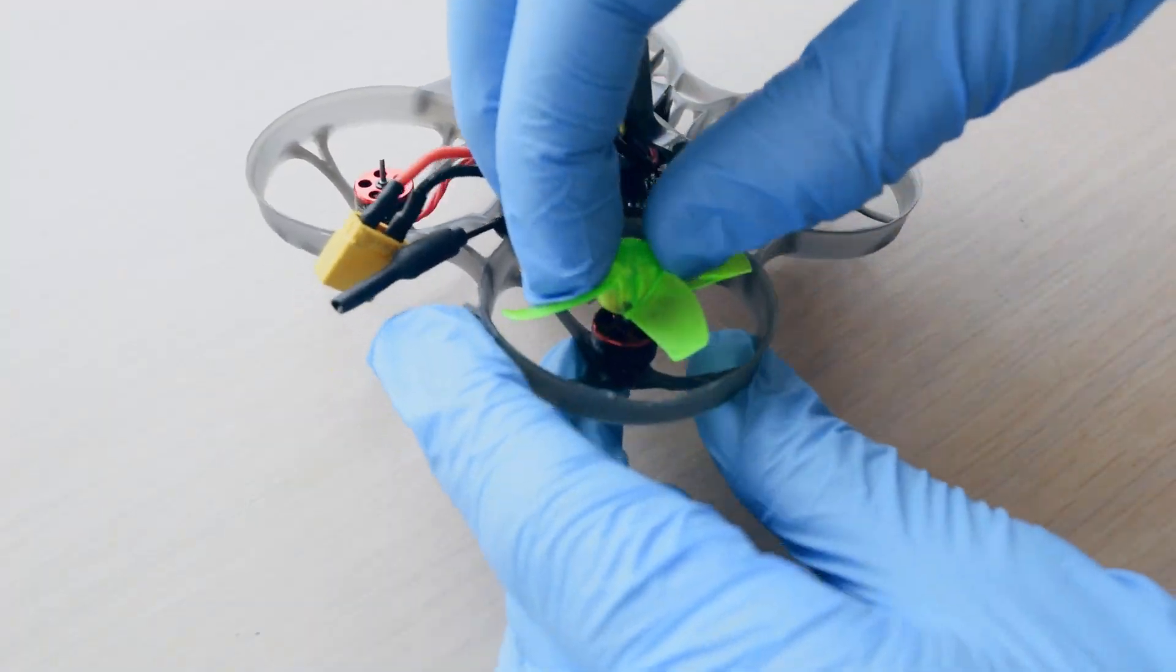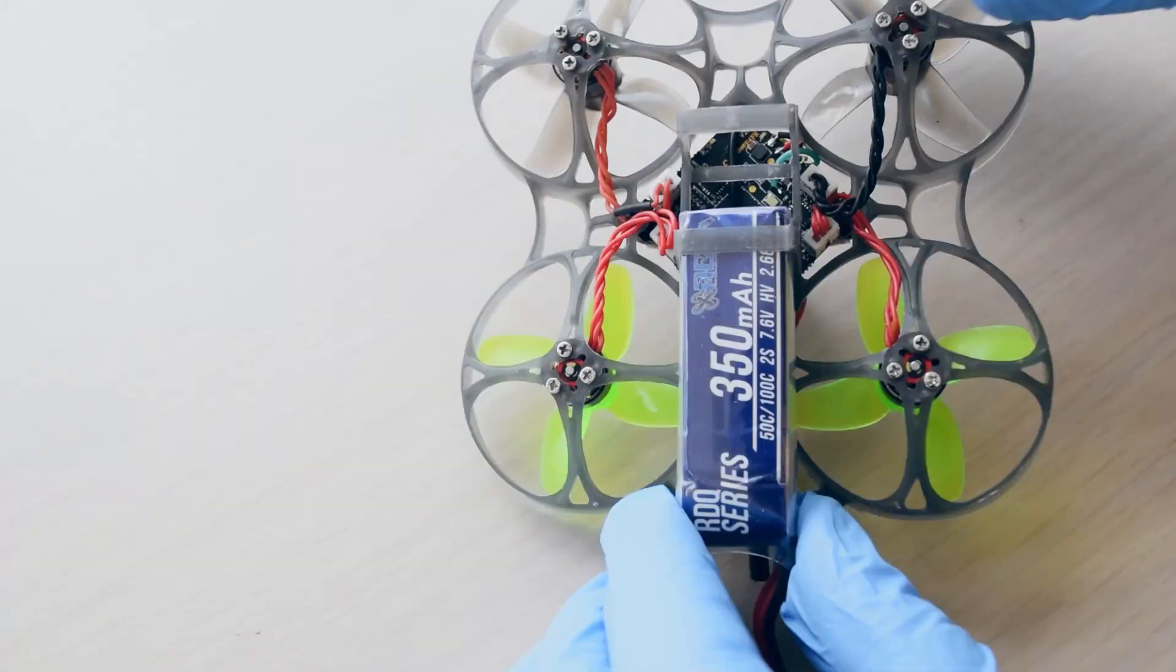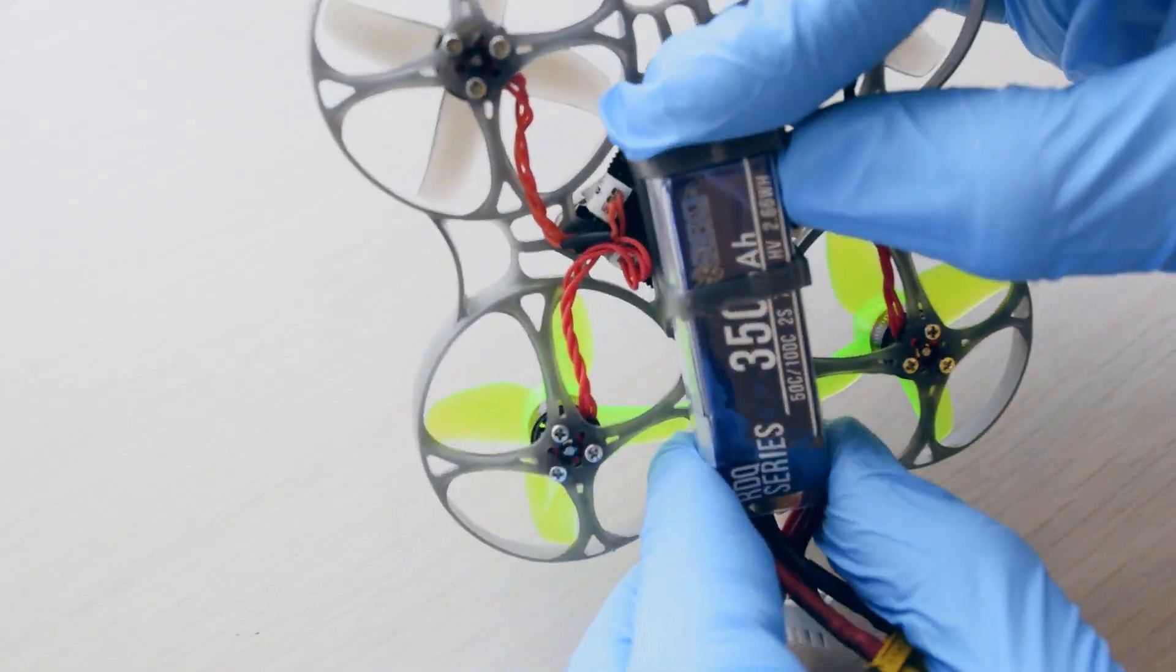Now we can add some props. And the battery I'm using is pretty large, but with a bit of force, it will just squeeze into the frame. Like this.